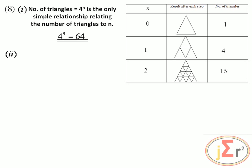We also need to determine the number of triangles formed when n is equal to 6. That is 4 to the power of 6, which turns out to be 4096.